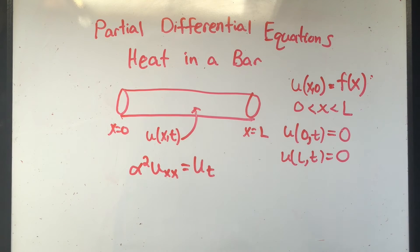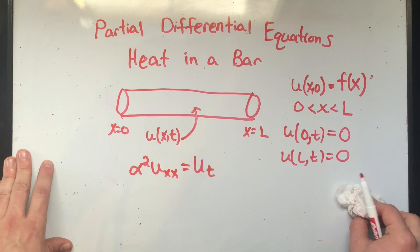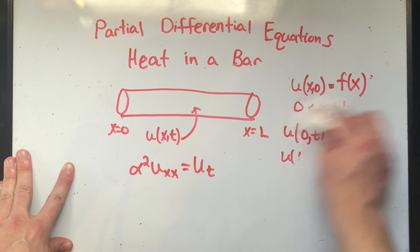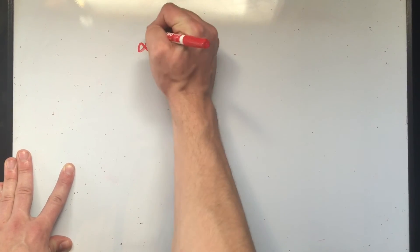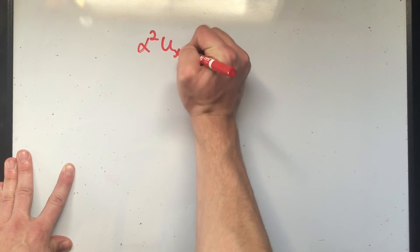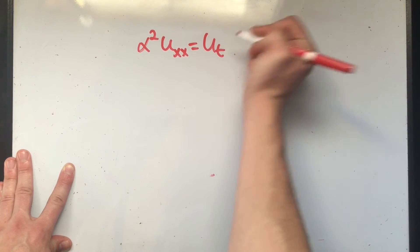So our answer, u of X and T, which is what we want to find, satisfies this differential equation with these boundary conditions. And we're going to do that. So I hope you're ready because we're going to get into it. I'm going to rewrite some of this stuff, rewrite what I need.